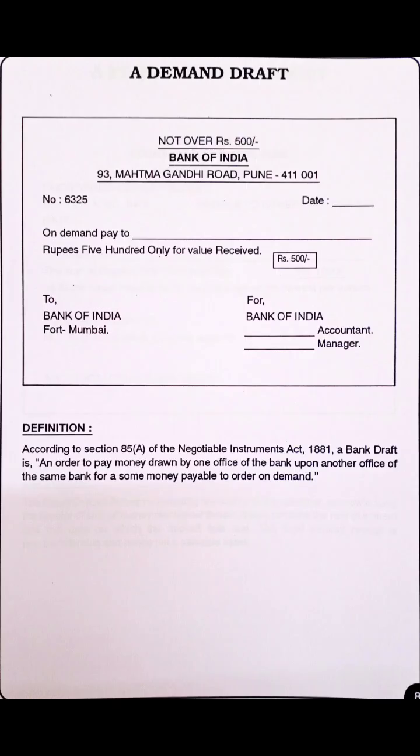Starting with demand draft — in the exam they can confuse you by writing 'demand draft' or 'bank draft,' but both are the same. You have to draw a box. Write 'not over rupees 500' — the amount should not exceed that. Then write the bank name and address, for example Bank of India or State Bank of India, with the address like MG Road, Pune, and the pin number.